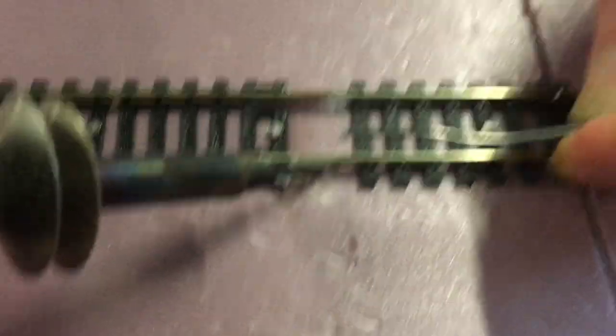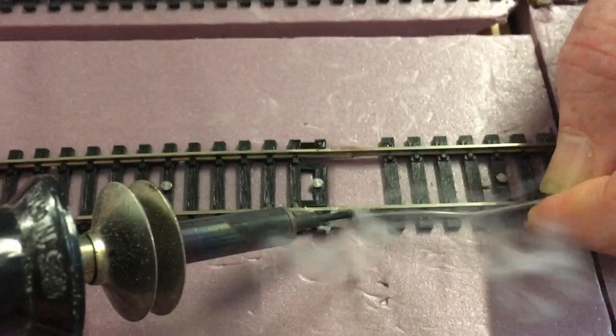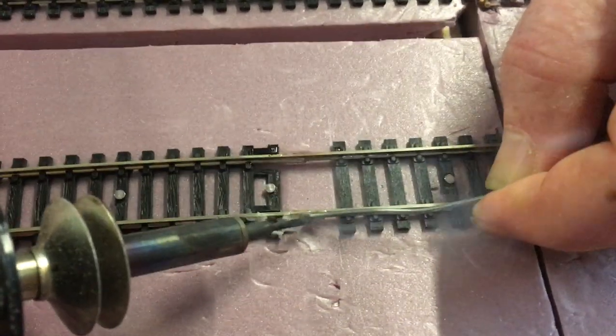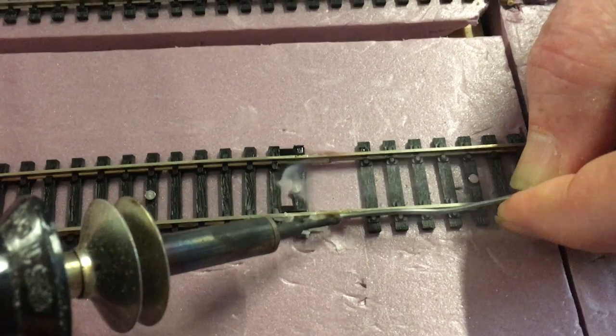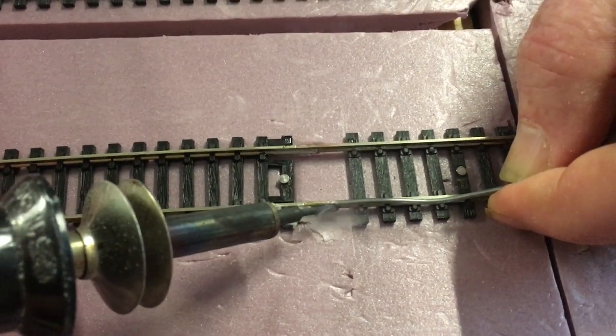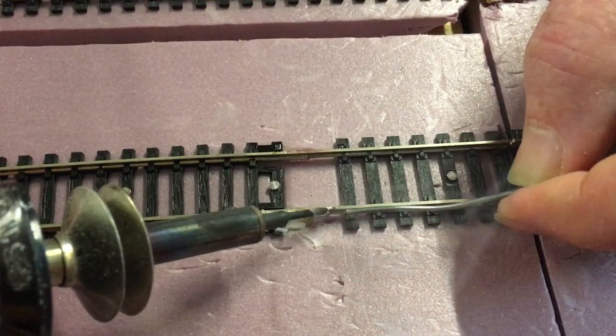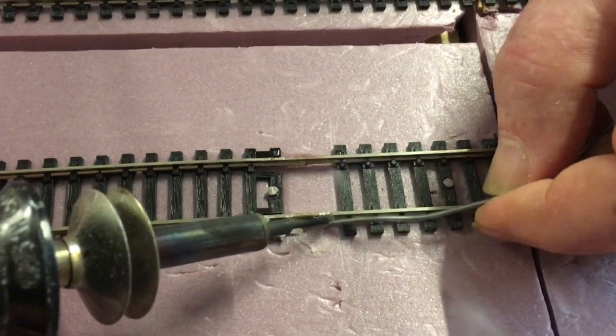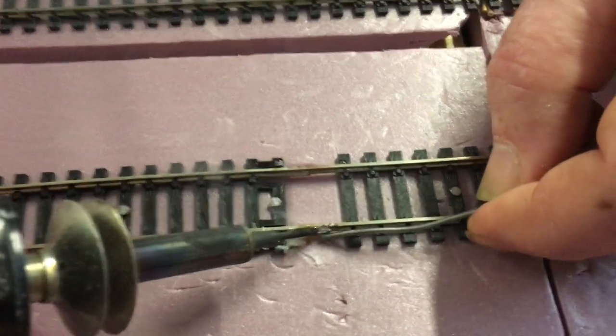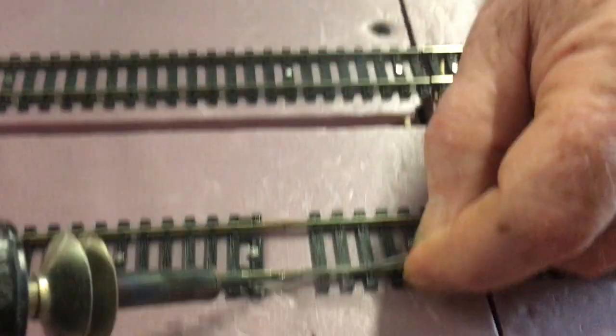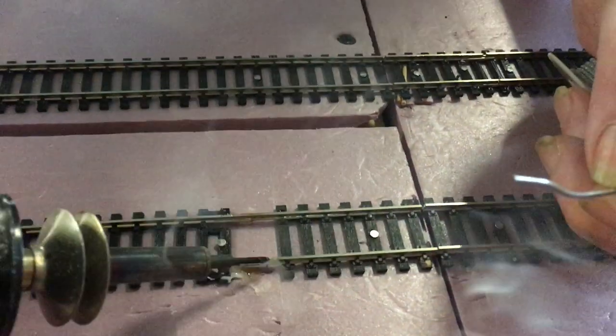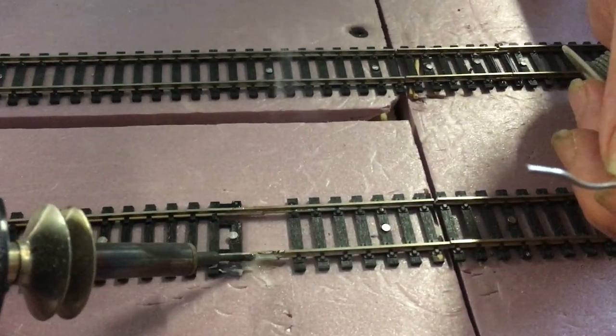There we go. Now we're going to do the other side. Again, hit the flux first. Then just solder into it. And just let it flow. It will flow right down in there for us. Just like that.